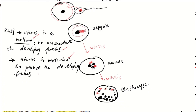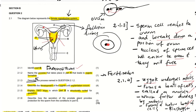So that covers the four marks for question 2.1.5. Remember: whenever they ask about structural suitability, you must mention what the part has that makes it suitable to perform a certain function. In this case, we were asked what the uterus has that makes it suitable to carry a baby — that is, for gestation.